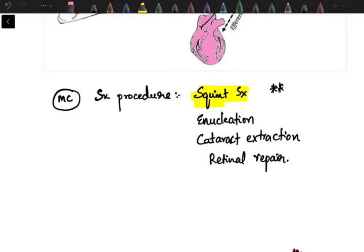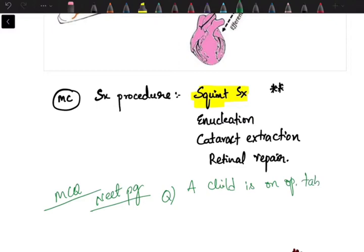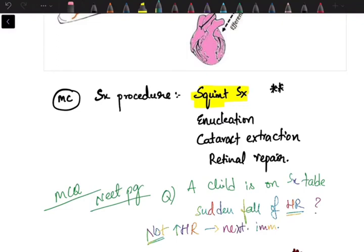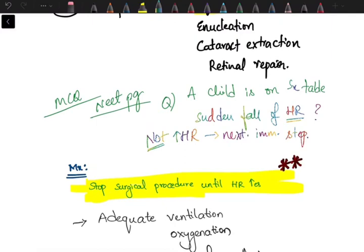This pattern of question is important in MCQ for NEET PG. For example, if a question states that a child is on the surgical table, and while performing the operation there is sudden fall of heart rate or bradycardia, what are you going to do? The next immediate step is not increasing heart rate. The next immediate step is to stop the surgical procedure until heart rate increases. This is very important.